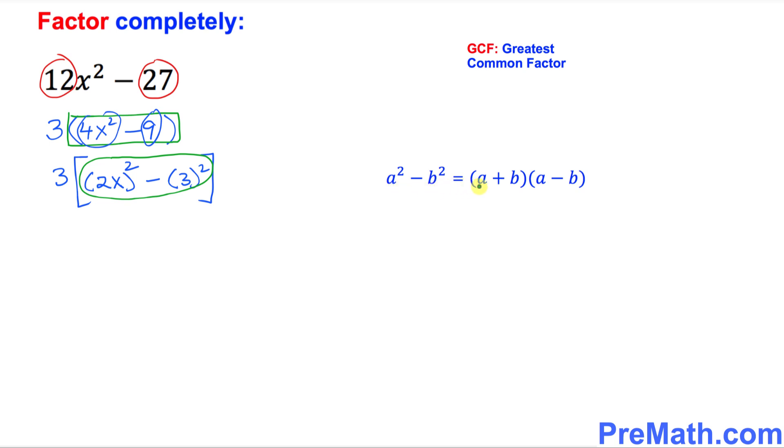The difference of two squares equals the product of sum and the difference. Here I want you to look at this thing: 2x I want to call it a, and 3 I want to call it b, so that's going to become a square minus b square.